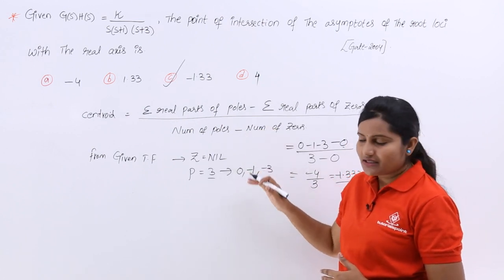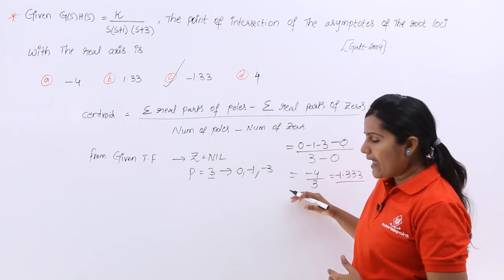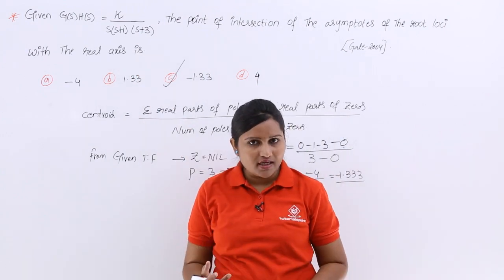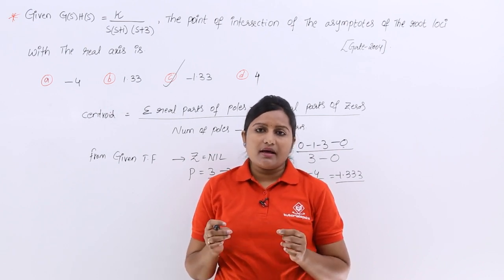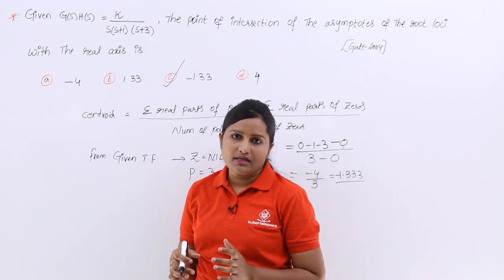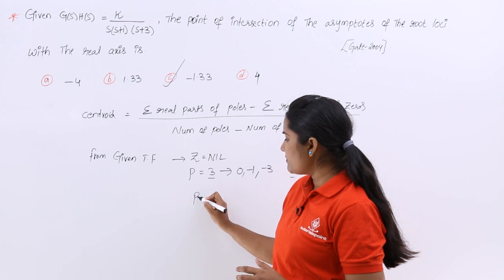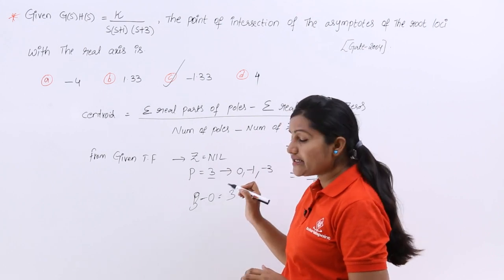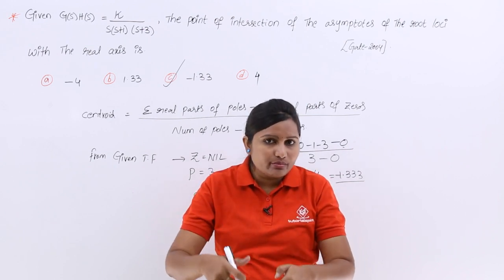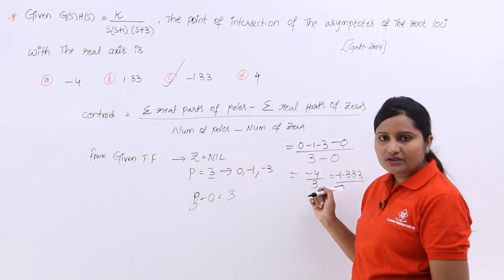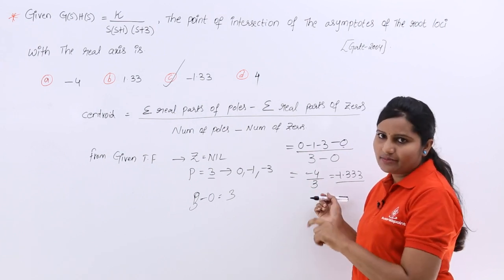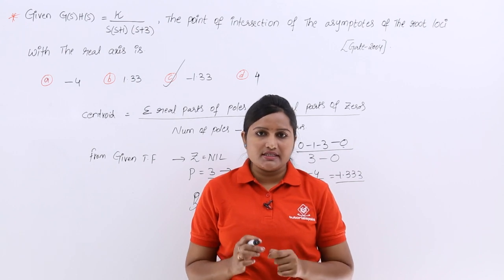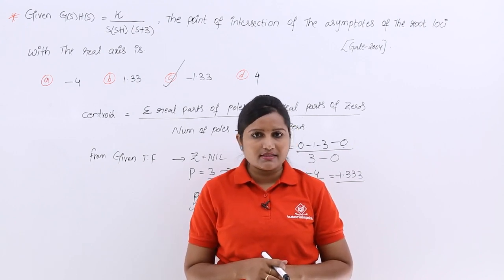For this problem the centroid is -1.333. If you draw the root locus diagram for this open loop transfer function, the number of asymptotes equals n minus m, that is poles minus zeros = 3 - 0 = 3 asymptotes. All three asymptotes meet on the real axis at this centroid point of -1.333. So this is the intersection point of all asymptotes for this open loop transfer function.